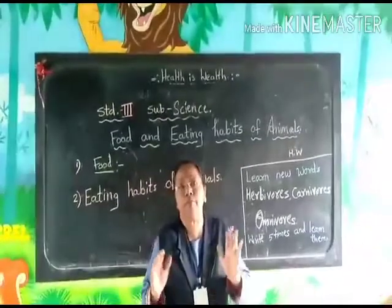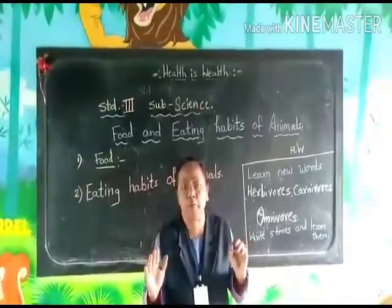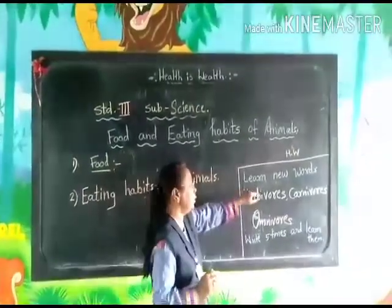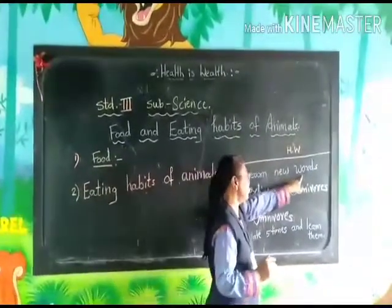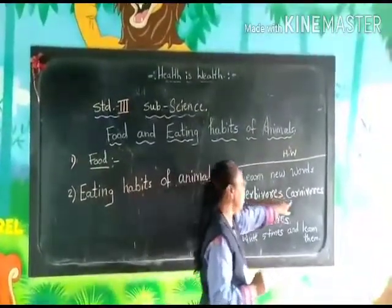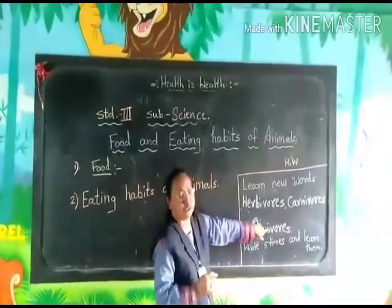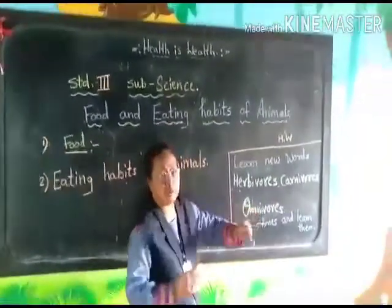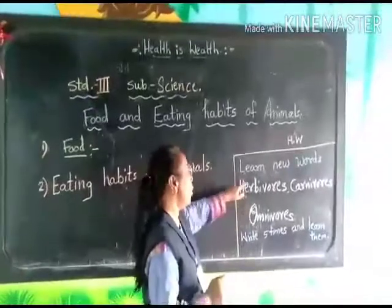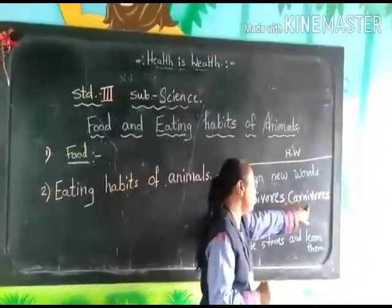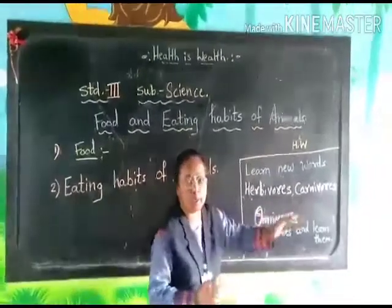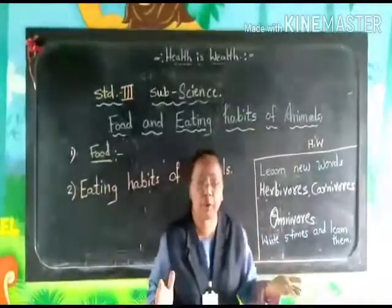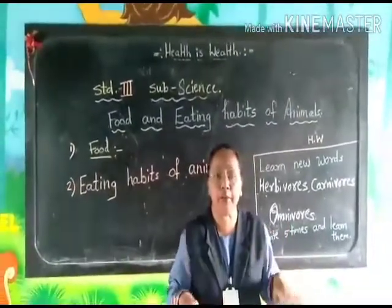Now you have studied about the types of animals and their eating habits. For homework, you will learn these new words: herbivores, carnivores and omnivores. Write them five times and learn them. Write the definition of each, give some examples, paste some pictures for examples, and send it in. Thank you.